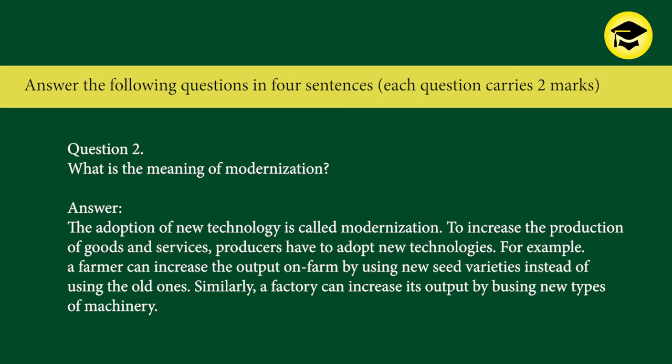Question 2: What is the meaning of modernization? Answer: The adoption of new technology is called modernization. To increase the production of goods and services, producers have to adopt new technologies. For example, a farmer can increase the output on his farm by using new seed varieties instead of old ones. Similarly, a factory can increase its output by using new types of machinery.